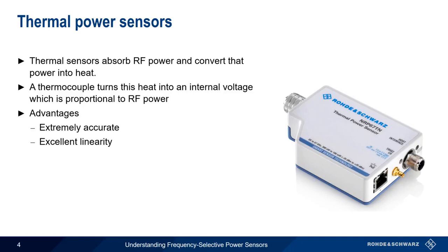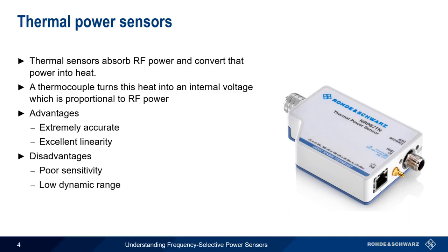Thermal sensors do, however, suffer from a number of disadvantages. The most serious of these is poor sensitivity, meaning that thermal sensors can only be used to measure relatively high power signals. They also have a small dynamic range and lower measurement speed.